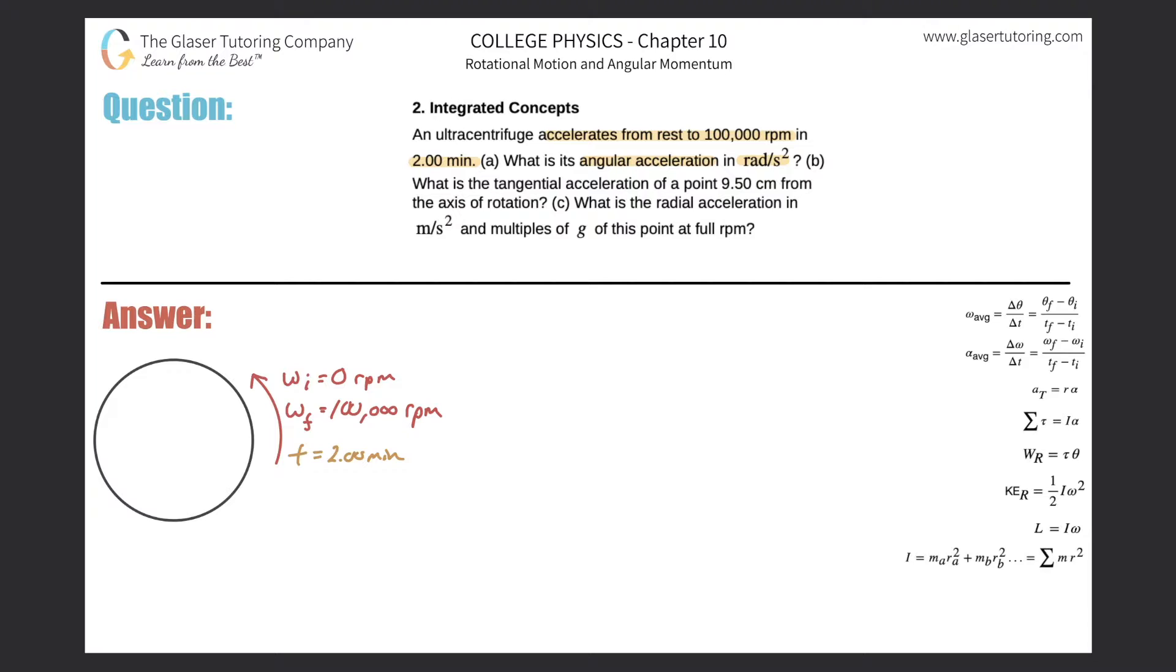What is its angular acceleration in radians per second squared? So just a little picture here. We have a centrifuge with these characteristics. Initial angular velocity is zero RPM, final would be 100,000 RPM. The time over which we're analyzing this change is two minutes.